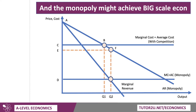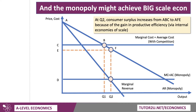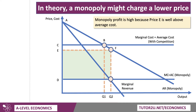I've labeled F — that's quite important. So here, with big scale economies, the price charged is E, which is lower than C, and therefore there's a gain of C, B, F, E in consumer surplus. So consumer surplus increases from A, B, C to A, F, E because of the gains in productive efficiency we associate perhaps with a dominant firm. And of course, the firm can also make a high profit because the price they're charging, E, is well above the unit cost D.